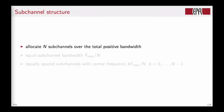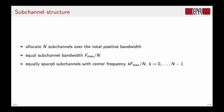Now to formalize the sub-channel structure, suppose that we want to allocate N sub-channels over the total positive bandwidth. We want the sub-channels to have equal bandwidth, so their bandwidth will be Fmax over N, where Fmax is the maximum frequency allowed by the channel. And we equally space the sub-channels by centering them over K Fmax over N, with K that goes from 0 to big N minus 1. This means that the first channel, K equal to 0, will be baseband, and then the subsequent channels will be passband with center frequencies given by this formula.